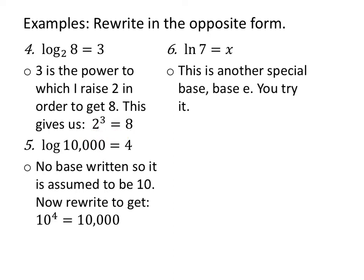Number 5: log of 10,000 equals 4. If there's no base written, it's assumed to be base 10. Remember, the log is an exponent, so 10 to the fourth equals 10,000. Number 6: natural log of 7 equals x. Remember, this is a special one — hit pause, give it a shot on your own. You know the base is e. The log equals the exponent, so x is the exponent. x is the power I put on e in order to get 7.